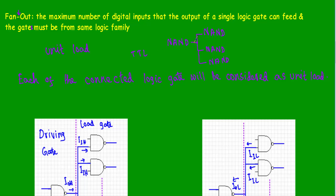Here I have a TTL NAND gate, and you can see that the output of this NAND gate is connected with the inputs of three other NAND gates. The maximum number of inputs connected to the output terminal of this NAND gate is three, so its fan-out is equal to three. The concept of fan-out is very important for understanding interconnected logic systems.